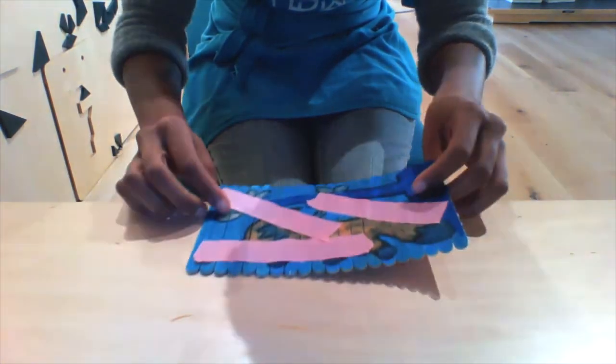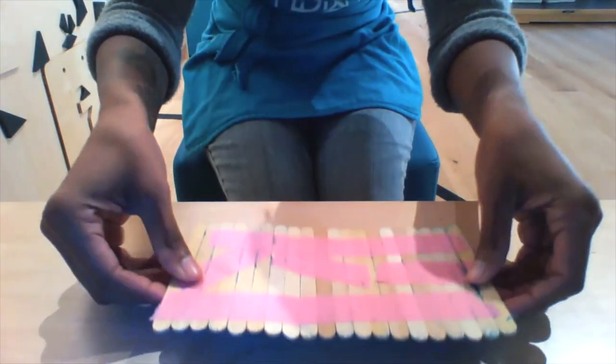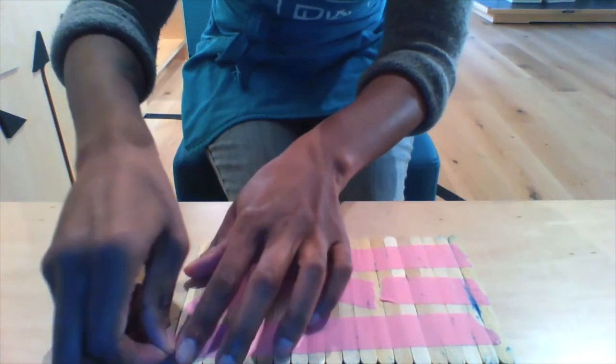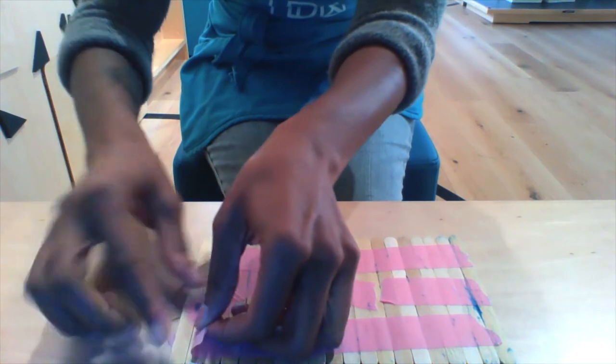When that's done, we flip it over again and we remove the strips of tape from the blank side.